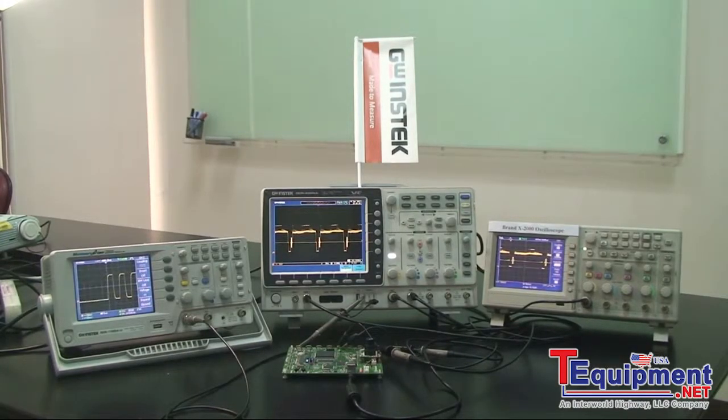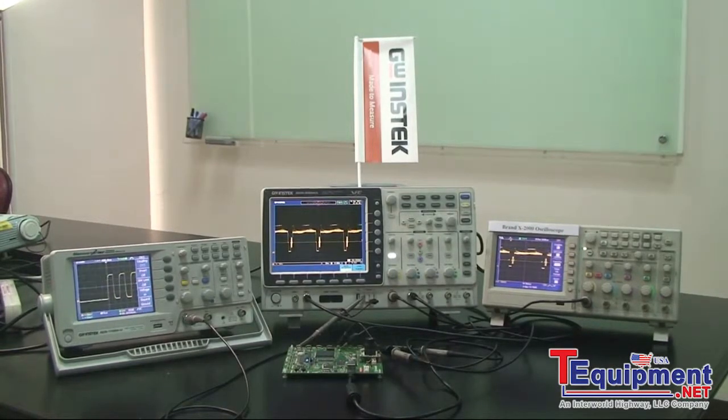The following demonstration will verify the GW INSTEK GDS-2008 oscilloscope has a waveform update rate of 80,000 waveforms per second. This demonstration will be divided into two parts.